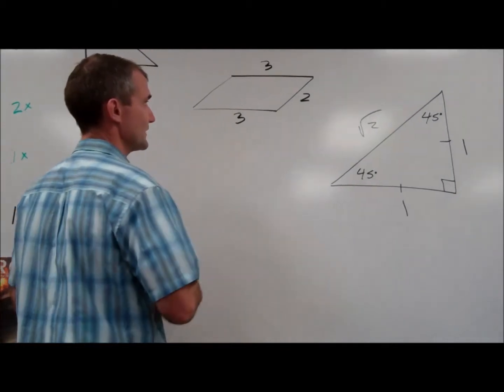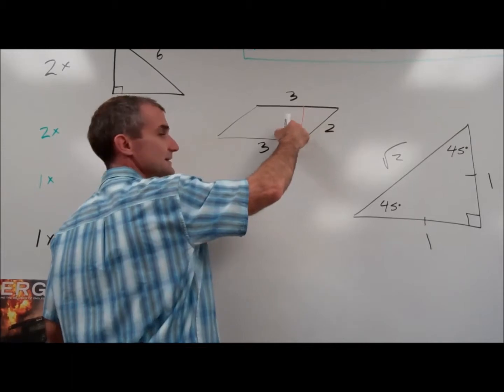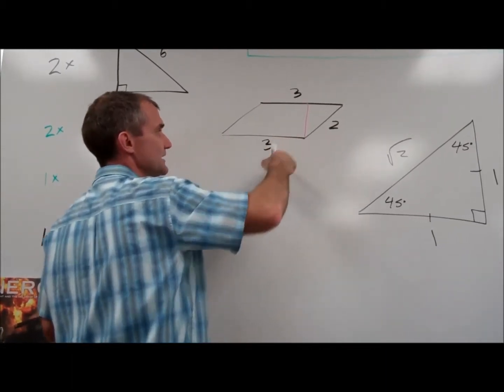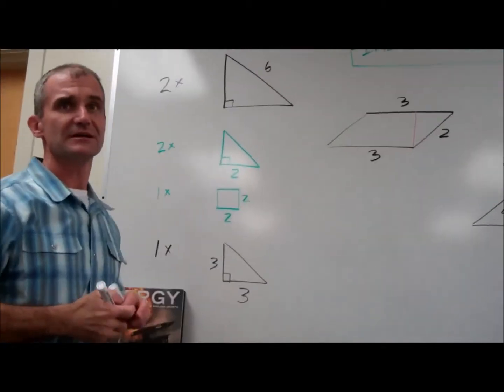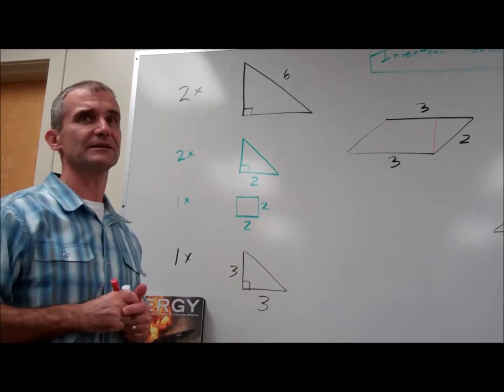these are 45 degree angles, so you can figure out the height of the parallelogram. Everything needs to be in exact format, not decimal approximations. So everything's in terms of radicals, like root two. Everybody can understand all that?